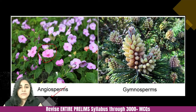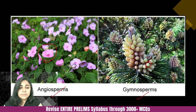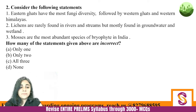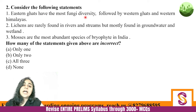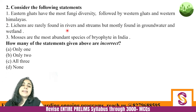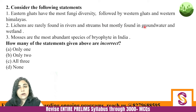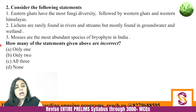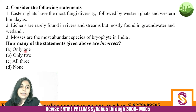An angiosperm flower is a very common flower, while gymnosperms have these cone-like structures. Next question: Consider the following statements. Eastern Ghats have the most fungi diversity followed by Western Ghats and Western Himalayas. Lichens are rarely found in rivers and streams, but mostly found in groundwater and wetlands. Mosses are the most abundant species of bryophytes in India. How many of the given statements are incorrect?